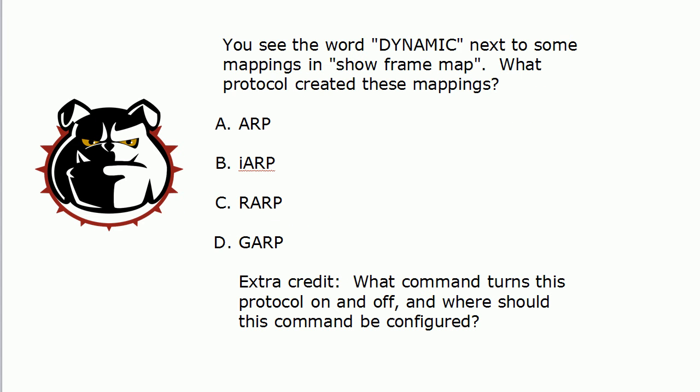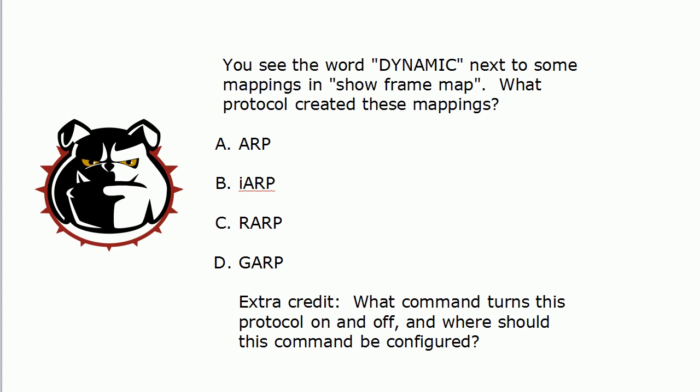Let's go to question four. You see the word 'dynamic' next to some of your mappings in Show Frame Map. What protocol created these mappings? And a little extra credit: what command turns that protocol on and off, and where should the command be configured — globally, on the interface, under another config?